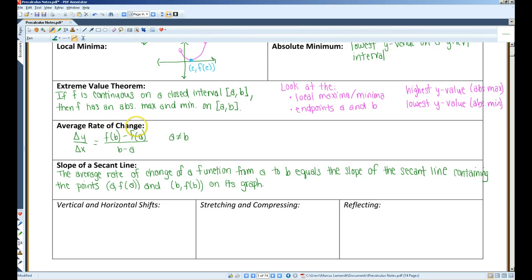The average rate of change between two points on a graph can be found with the following equation. You guys will probably notice that this equation looks an awful lot like the equation to find the slope of a line.